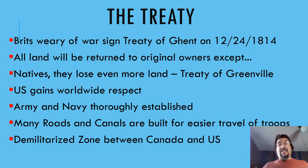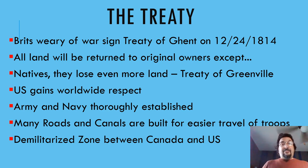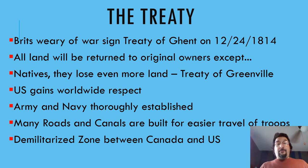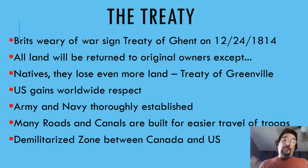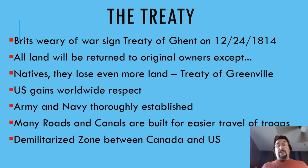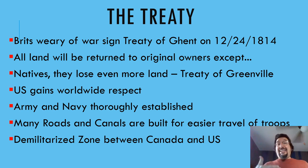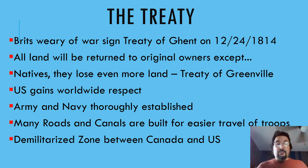The Treaty of Ghent is signed December 24th, 1814 — Christmas Eve. All land is going to be returned to the original owners, so the whole war is basically pointless. All the land goes back, except for the Native Americans, who lose even more land with the Treaty of Grenville. The U.S. gains total worldwide respect — everyone's like, man, they can beat the British. The Army and the Navy are thoroughly established after this war. We get a lot of roads and canals built during this war for easier troop movements. At the end of the war, we get a demilitarized zone — a DMZ between Canada and the United States. They are totally peaceful, and we don't do anything until after 9/11, when they started requiring passports.